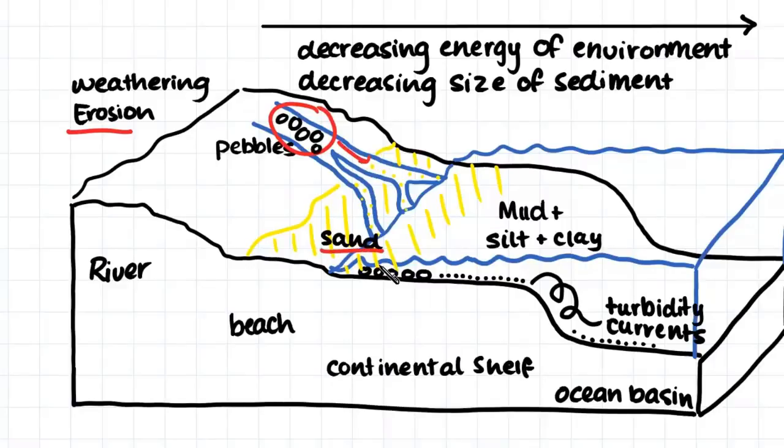Here our sand is deposited as the energy of the water slowly decreases. Then as we move further out to sea, mud, silt and clay-sized particles are deposited as you move further out to sea. Then at the continental shelf we experience something called turbidity currents. These turbidity currents occur when sediment avalanches over the edge of the continental shelf and then form graded beds as they reach the ocean basin.